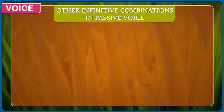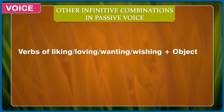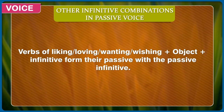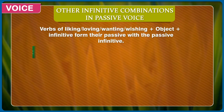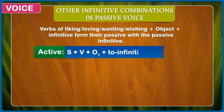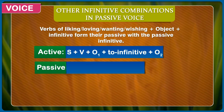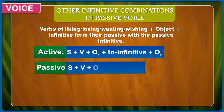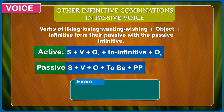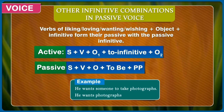Other infinitive combinations in passive voice. Verbs of liking, loving, wanting, or wishing + object + infinitive form their passive with a passive infinitive. Active: subject + verb + first object + to infinitive + second object. Passive: subject + verb + object + to be + past participle. Example: He wants someone to take photographs. He wants photographs to be taken.